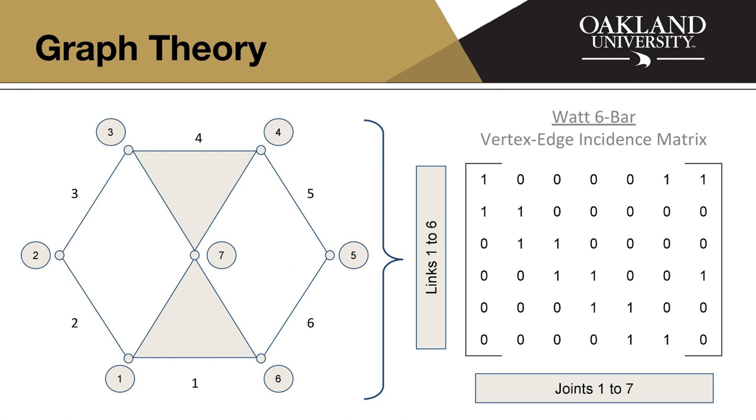But anyway, yeah, these are the most reduced versions of a six bar one degree of freedom mechanism. So from that, this is kind of where graph theory gets into things, is we can take this mechanism on the left, this isomer on the left, and we can reduce it to a matrix just using ones and zeros. So the vertex edge incidence matrix takes the joints and the links, so links are represented by the rows, and then the joints are represented by the columns.